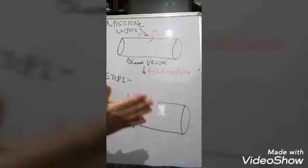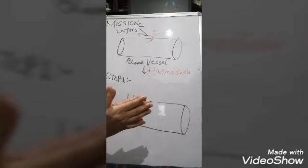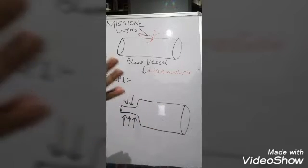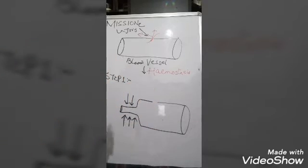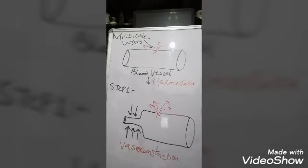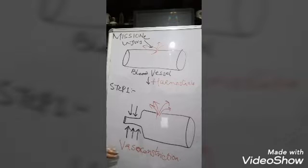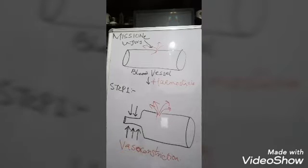Hemostasis involves four broad steps. We will discuss these steps one by one. Let's first focus on step number one, which we call vasoconstriction.